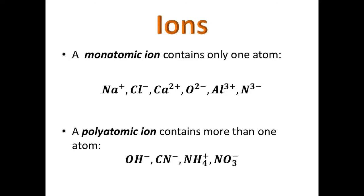Here's a look at some monatomic ions and polyatomic ions. Some monatomic examples are sodium, chloride, calcium, oxide, aluminum, and nitride. The polyatomic ions will have at least two, and usually more, atoms in them. For example: OH⁻ hydroxide, CN⁻ cyanide, NH₄⁺ ammonium, and NO₃⁻ nitrate. We will get to know these polyatomic ions a lot better in the next presentation.